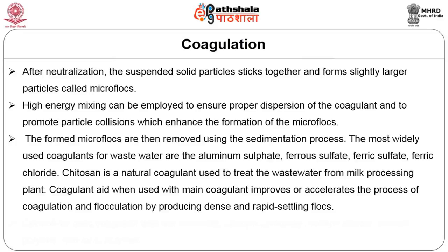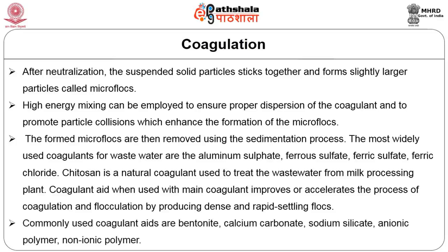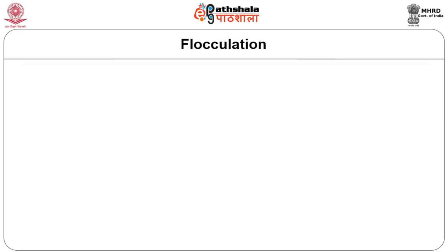The formed microflocs are removed using sedimentation. The most widely used coagulants for wastewater treatment are aluminum sulfate, ferrous sulfate, ferric sulfate, and ferric chloride. Chitosan is a natural coagulant used to treat wastewater from milk processing plants. Coagulant aids, when used with the main coagulant, improve or accelerate coagulation and flocculation by producing a dense and rapidly settling floc. Commonly used coagulant aids are bentonite, calcium carbonate, sodium silicate, ionic polymer, and non-ionic polymer.